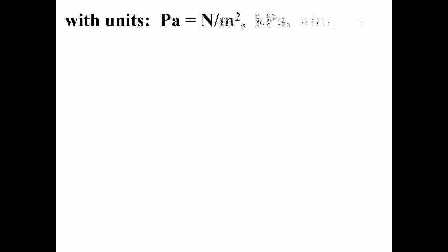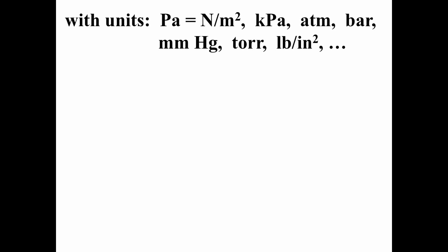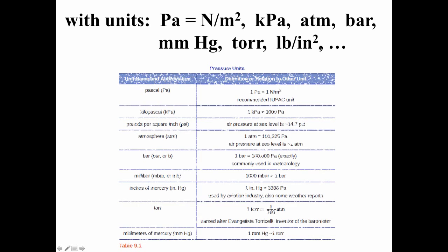There are a number of different units used for pressure. The SI unit of pressure is the pascal, symbolized by Pa. A pascal is a newton per meter squared — newton is force, and meter squared is a unit of area. Kilopascals are commonly used, as are atmospheres, bar, millimeters of mercury, torr, pounds per square inch, and more.